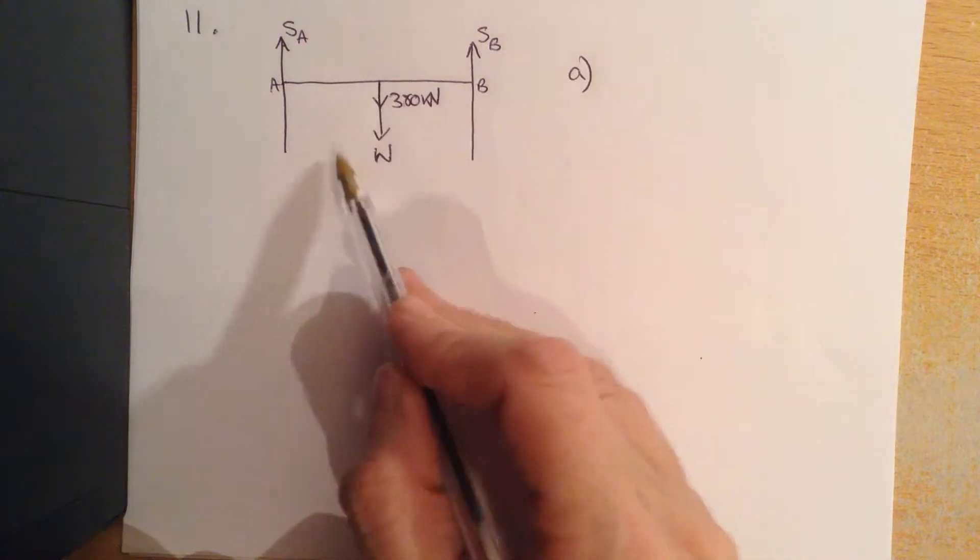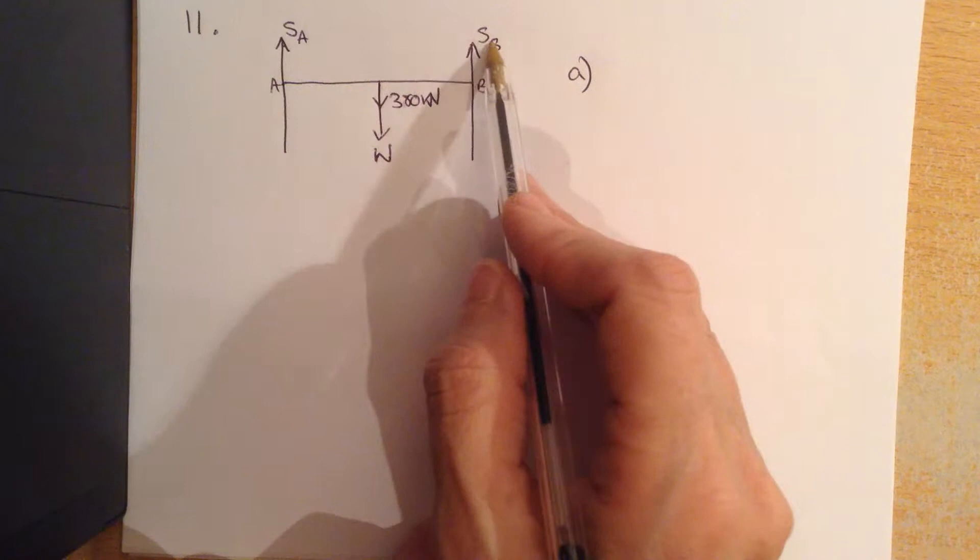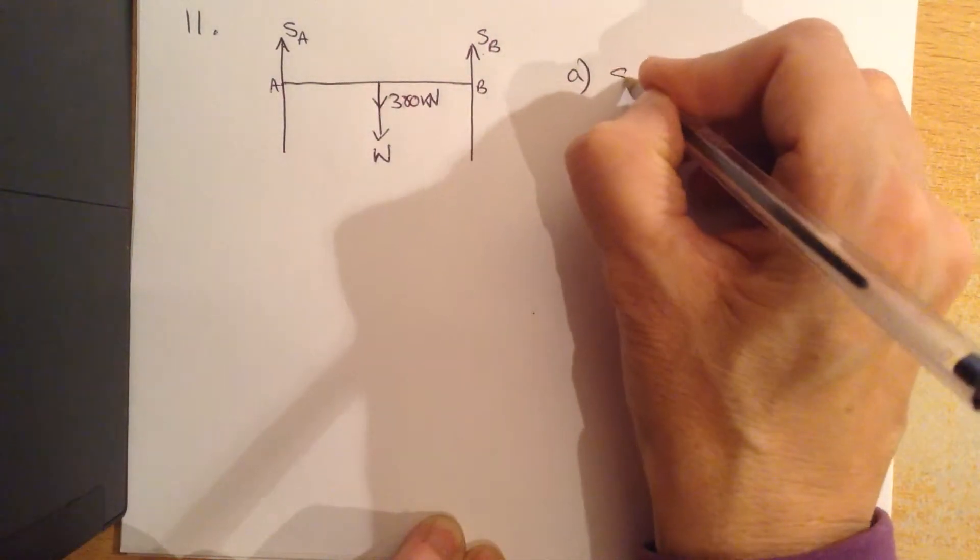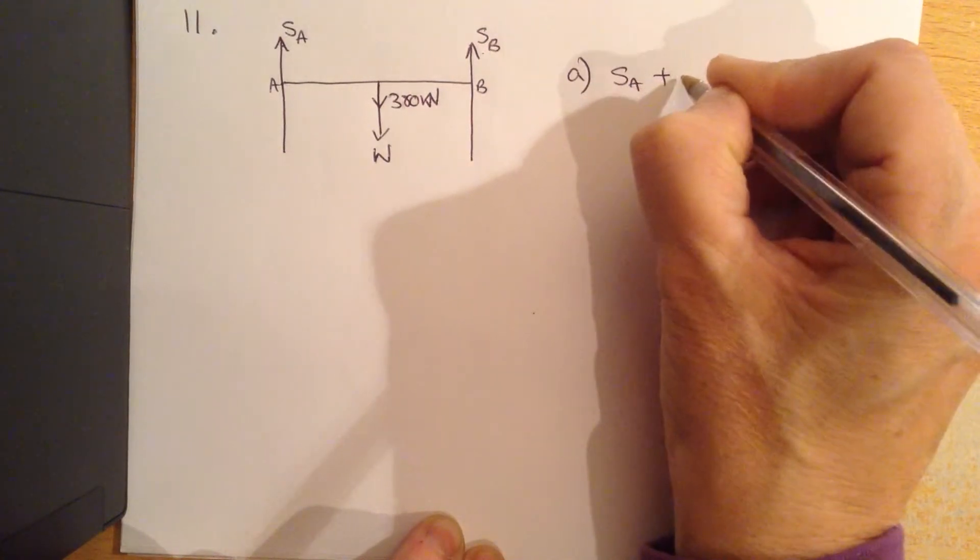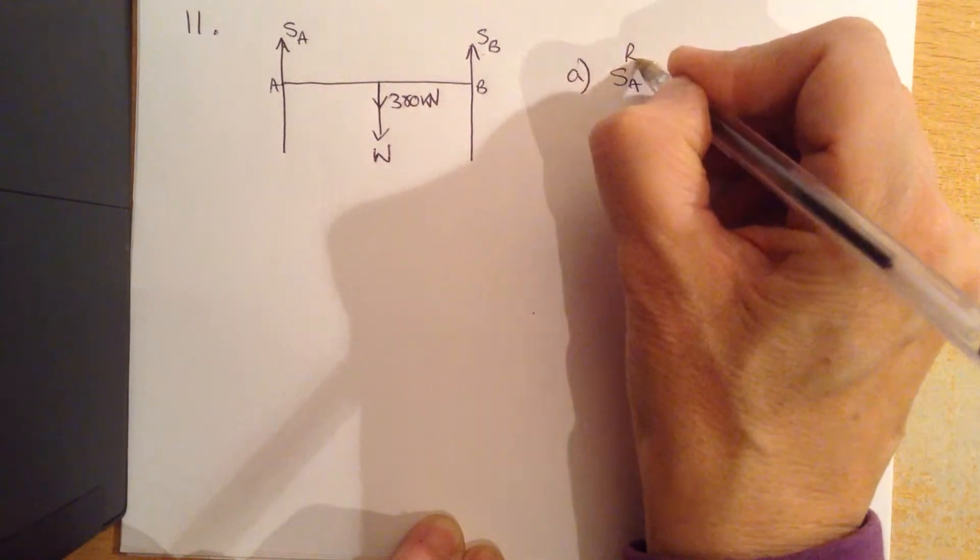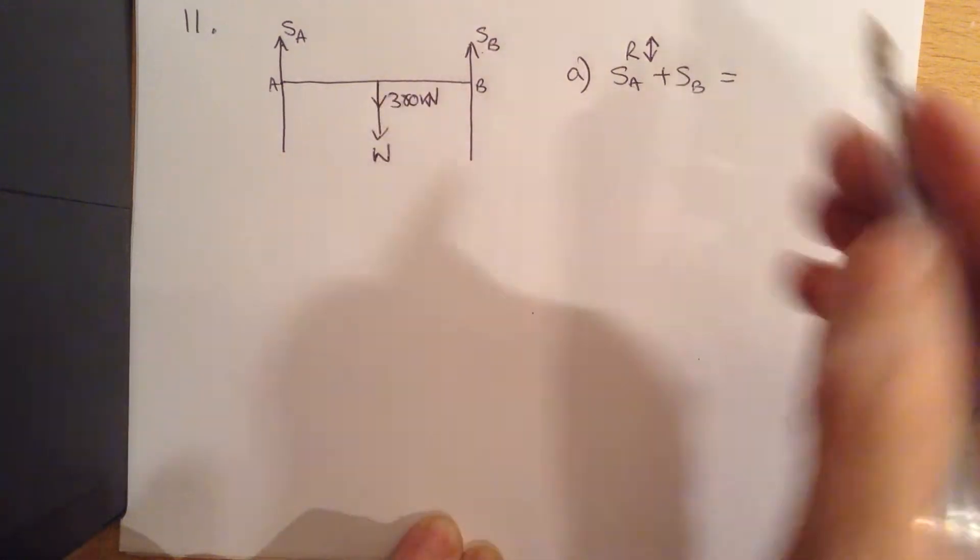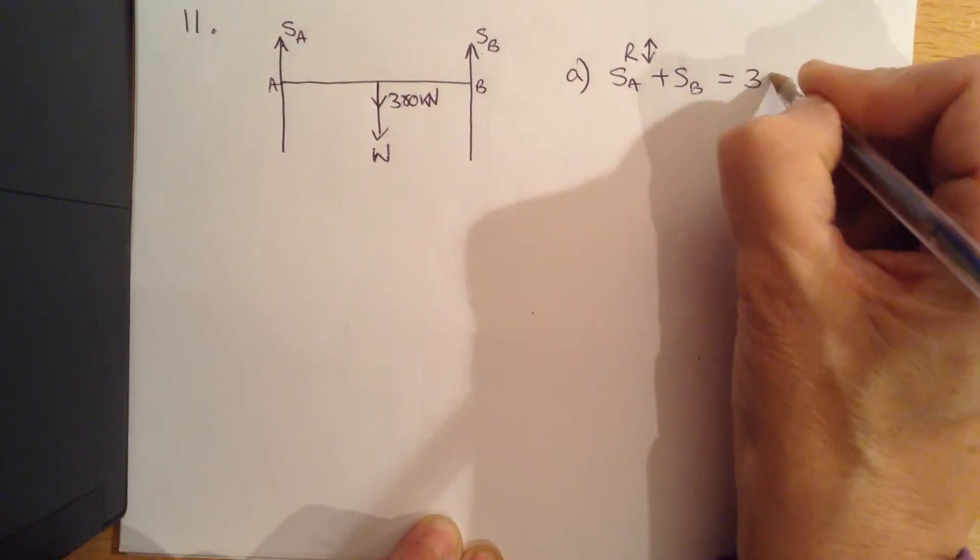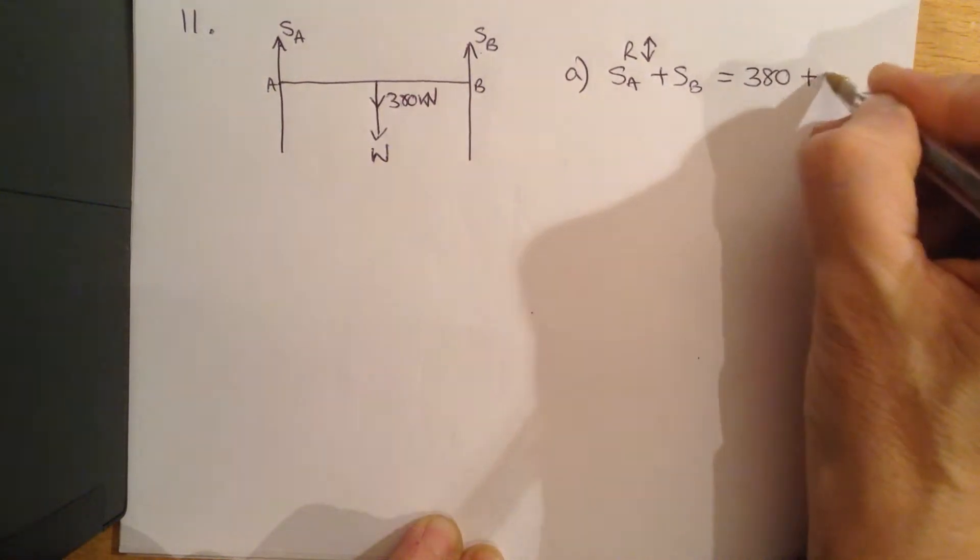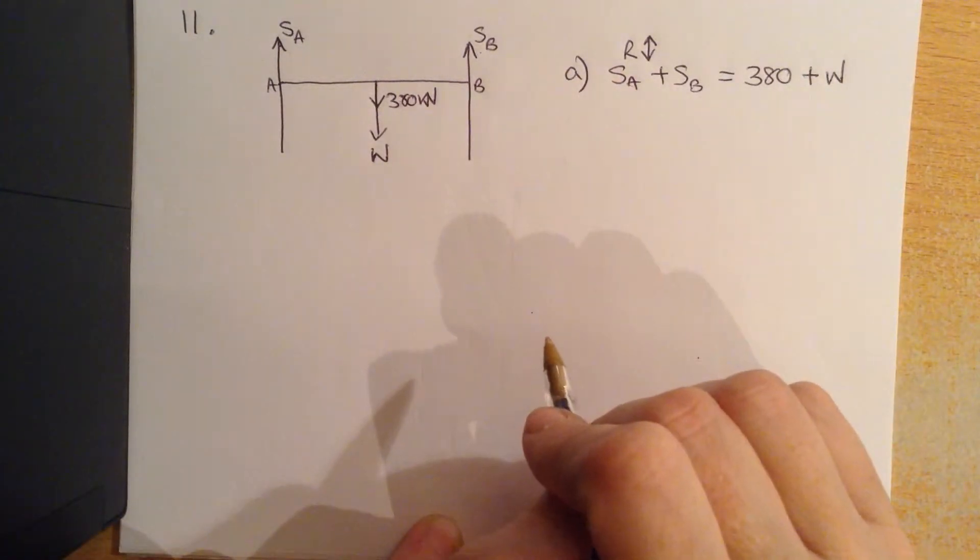Because it's symmetrical and all of the weight is hanging from the middle, we have to assume that both of these are going to be equal, but we can still write it this way: the support at A plus the support at B, if we are resolving vertically, the upward forces must be equal to the downward force which will be 380 plus W.